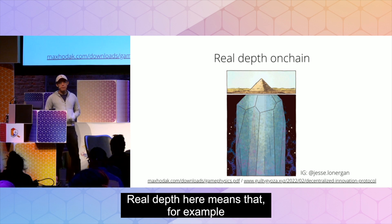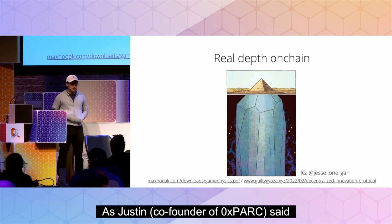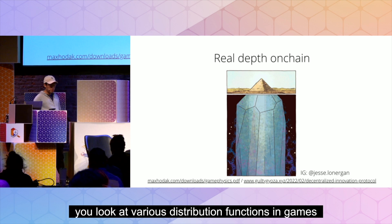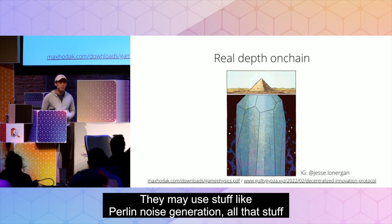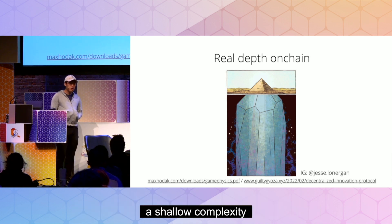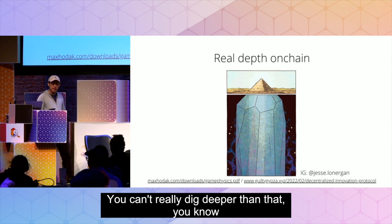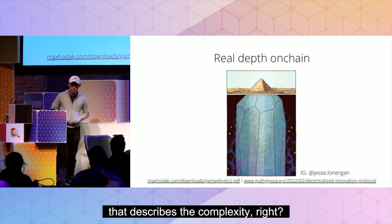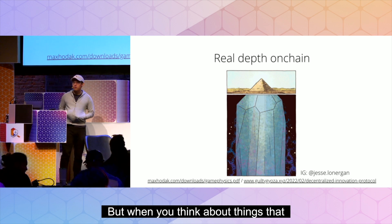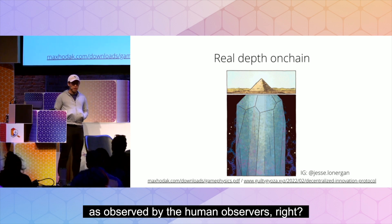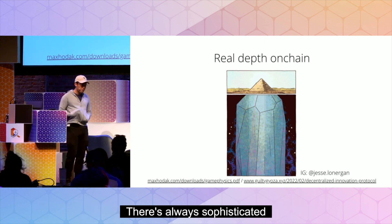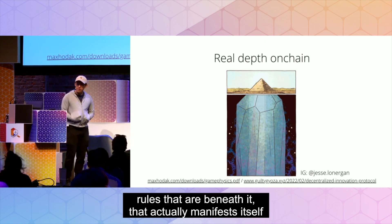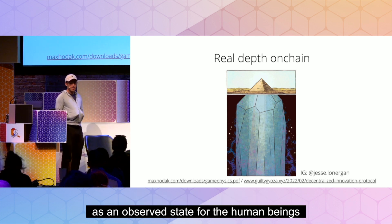Real depth here means, for example, as Justin said, the physics in this reality is supremely sophisticated and consistent. As opposed to various distribution functions in games — they may use stuff like Perlin noise generation. Perlin noise generation is what I call shallow complexity; you can't really dig deeper than that. You hit a wall in terms of the literal algorithm that describes the complexity — there's nothing behind it anymore. But when you think about things distributed in this world as observed by human observers, there are always sophisticated rules beneath that actually manifest as an observed state for human beings.